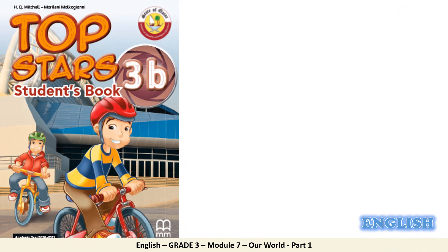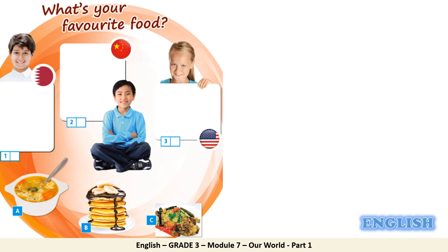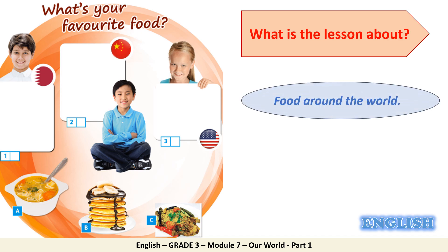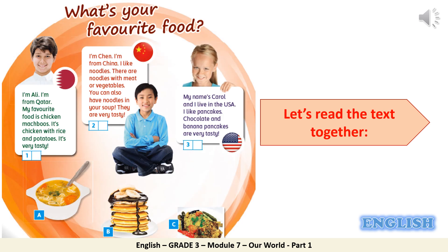Now we will move to our reading by opening our student's book to page number 88 and complete activity number 2. To start our reading lesson, I want you to take a close look at this picture. Can you help me answer the question: what is the lesson about? Do you think the lesson is about food around the world, countries around the world, or maybe food in Qatar? Let's read the text together to find out. Are you ready? It's reading time!